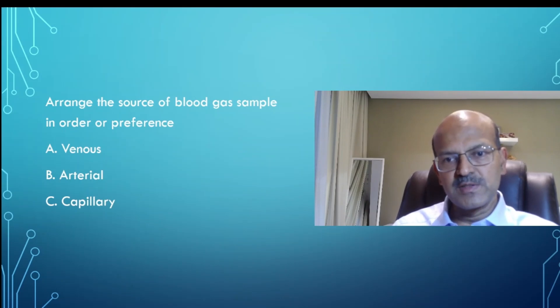Venous sample is the least preferred because the pH becomes significantly more acidotic and the carbon dioxide is significantly higher. PaO2 is not reliable in the venous or capillary sample. It's only the arterial sample that you rely on the PaO2. So if you're using capillary gas, rely on the saturation more.